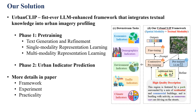Based on such motivations, we propose UrbanCLIP, the first-ever large language model enhanced framework that integrates textual knowledge into urban imagery profiling. Basically, it consists of two phases. The first one is the pre-training phase, where we conducted text generation and refinement, single-modality representation learning, as well as multi-modality representation learning. The subsequent phase is the urban indicator prediction for diverse downstream tasks.